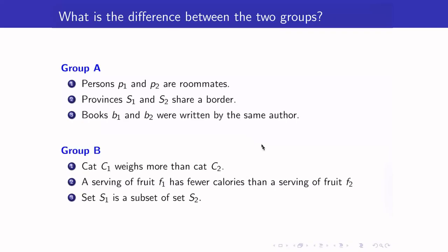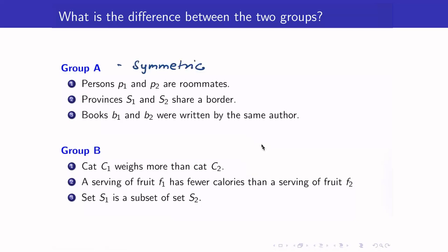Another group of relations would be Group B. Here we are comparing the weights of two cats. The second one is comparing the number of calories. And for the third one, we are checking whether one set is a subset of the other. Now, the difference between the two groups is that Group A is symmetric — if P1 is related to P2, then P2 is related to P1, and the same is true for the other relations.